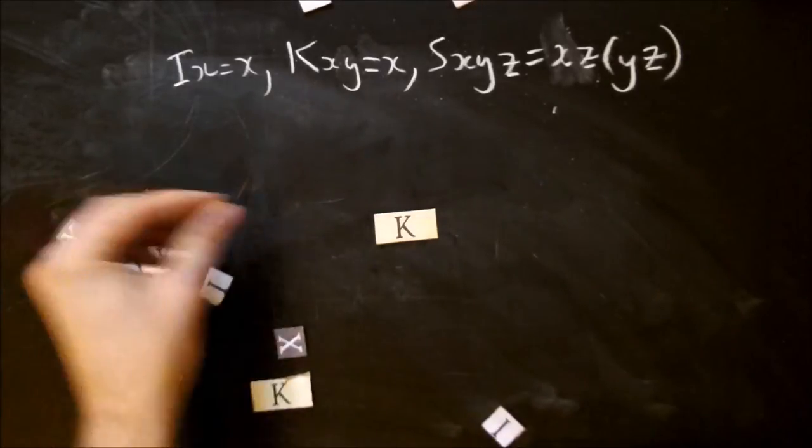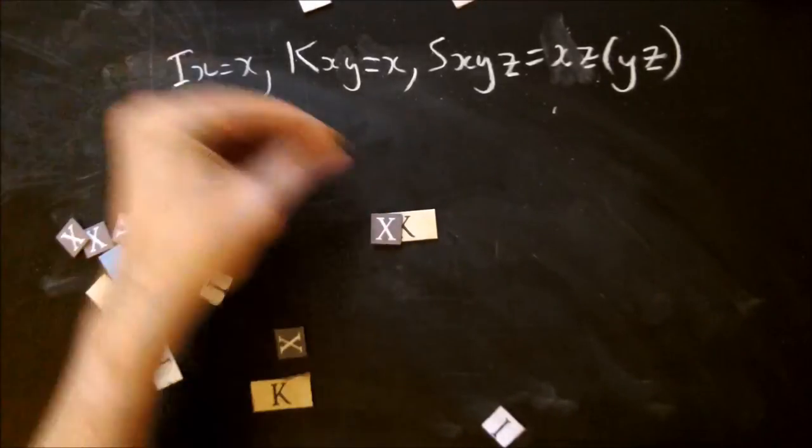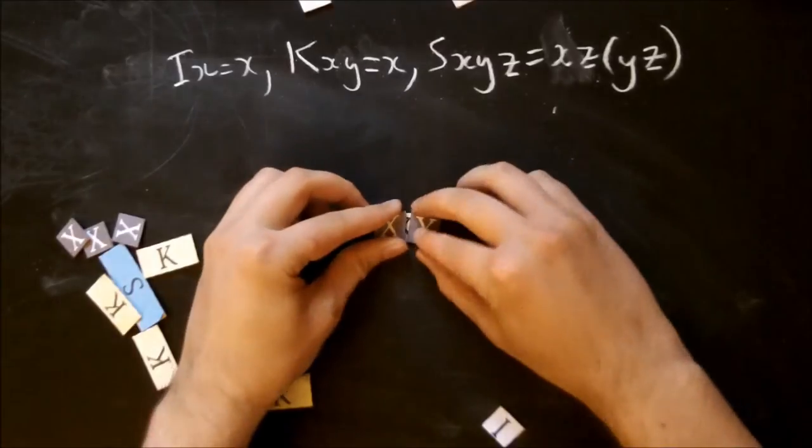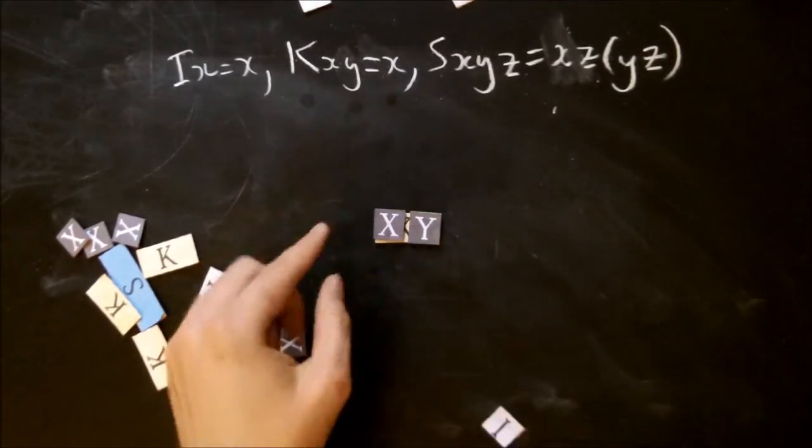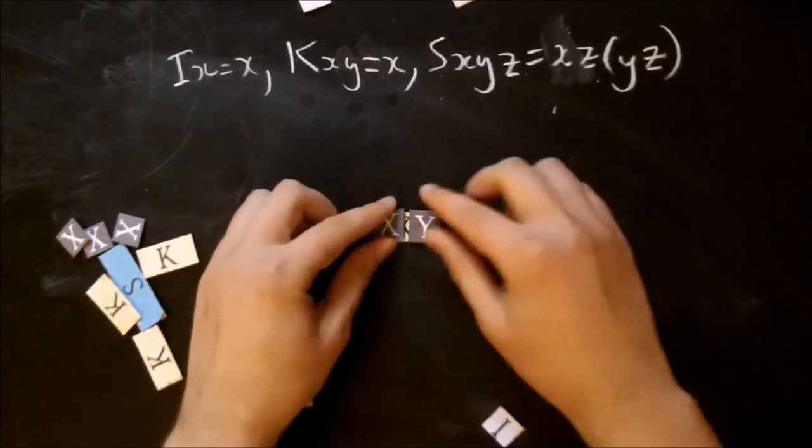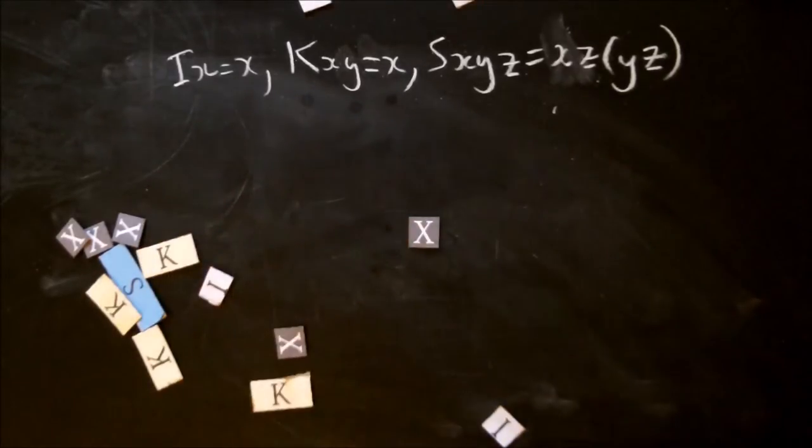Similarly, k, if I stick x and y on top, then I take only the first one, kxy equals x. So when I've got this full up, I get rid of all that and be left with just x.